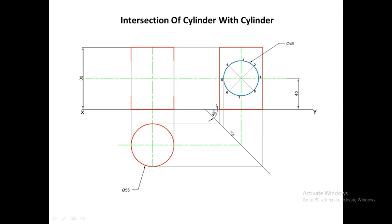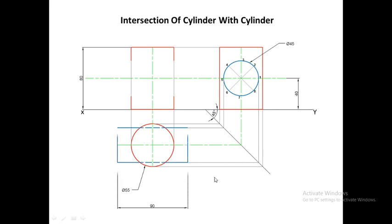We project the extreme points — point 5 and point 1 — vertically onto the 45-degree line, then draw horizontal lines into the top view to complete it. The total length of the horizontal cylinder is 90 mm, so from the center line we mark 45 mm to the right and 45 mm to the left. This completes the top view of the horizontal cylinder.